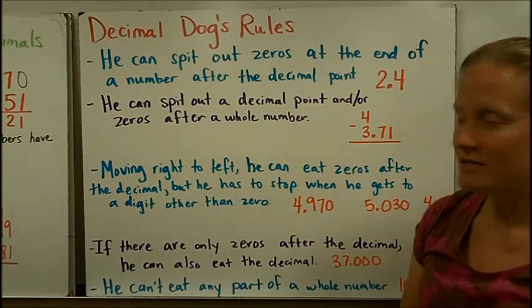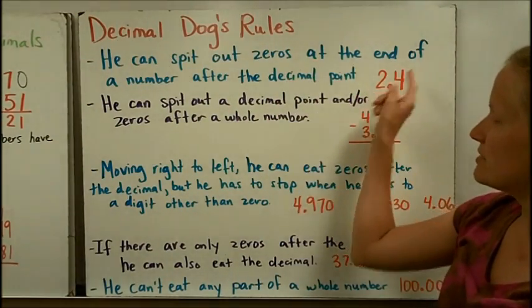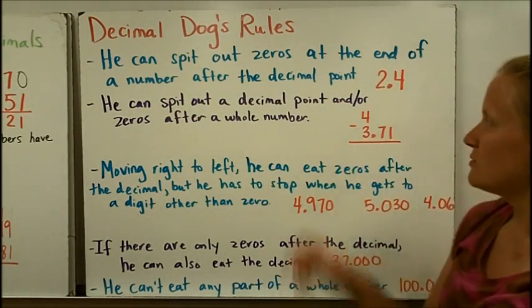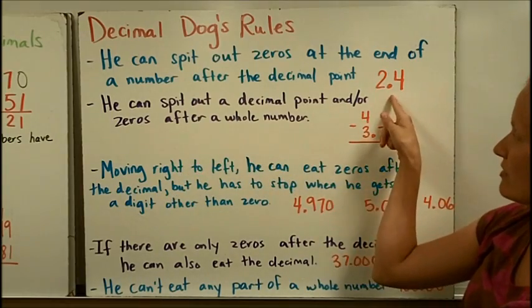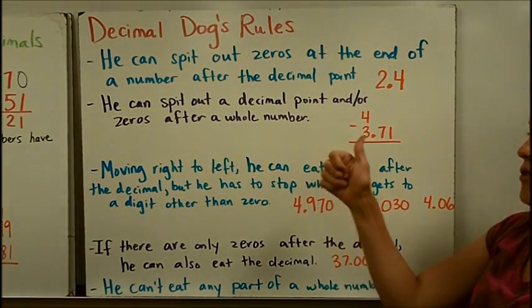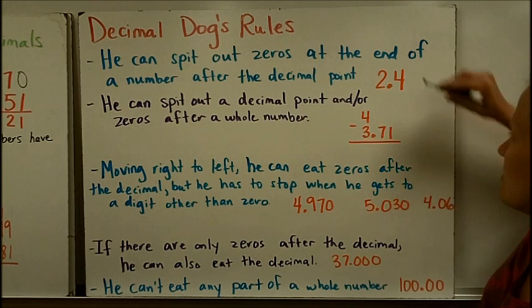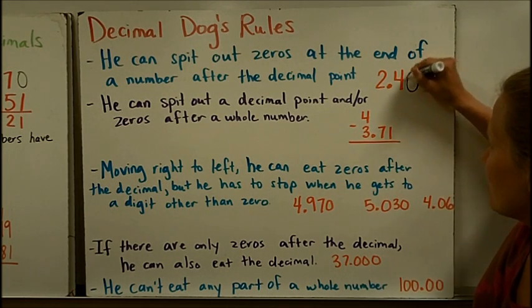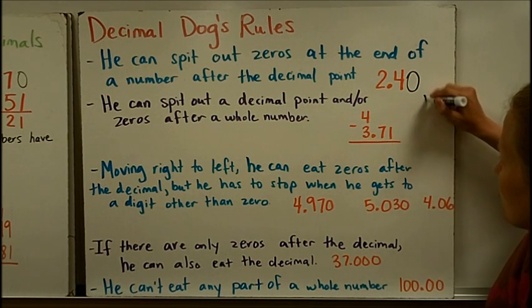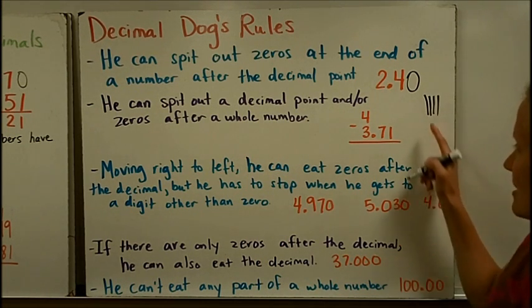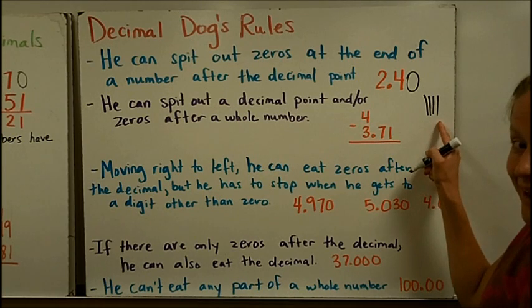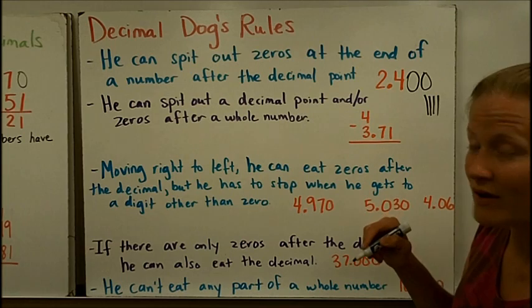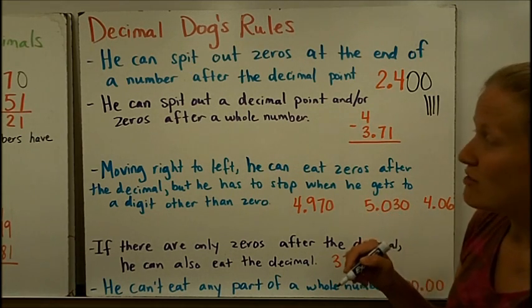Here are his rules. Decimal dog can spit out zeros at the end of a number after the decimal point. Decimal dog can't do anything to the whole number. But if you're after the decimal point and all the way at the end of the number, decimal dog can spit out a zero. So 2.4 is the same as 2.40. That's true because four tenths equals forty hundredths. It could even be 2.400.